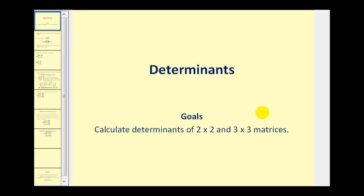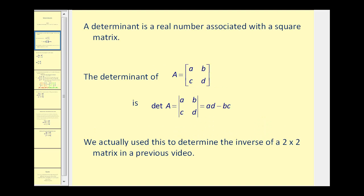Welcome to a video on determinants. This video will show how to calculate determinants for two by two and three by three matrices. A determinant is a real number associated with a square matrix. If A is a square matrix, the determinant of A can be written with vertical bars, and it's equal to AD minus BC. We actually used this in an earlier video to determine the inverse of a two by two matrix.